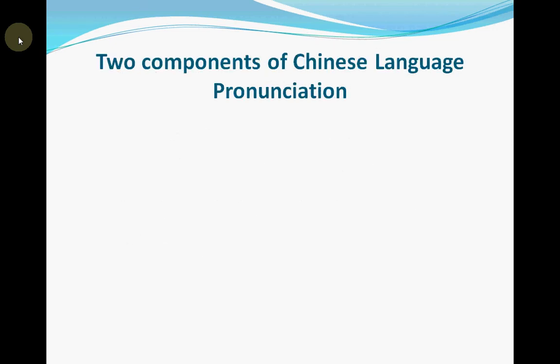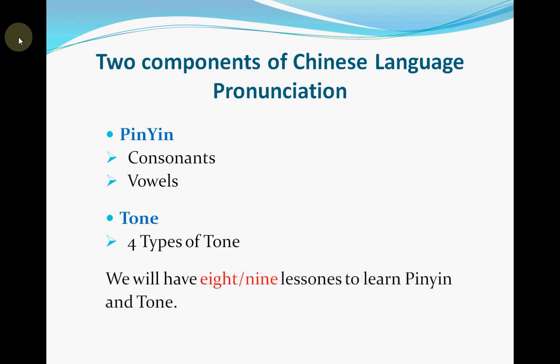The first two bites we are going to take for learning Chinese are pinyin and tone. Pinyin and tone are the two basic and also the most important components of Chinese pronunciation. Chinese language learning is all about pronunciation, so at the beginning we are going to learn pinyin and tone. We still have to take one bite at a time.